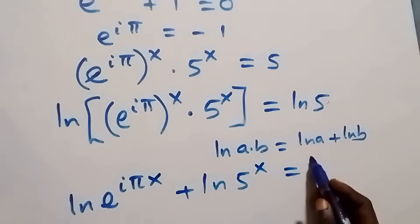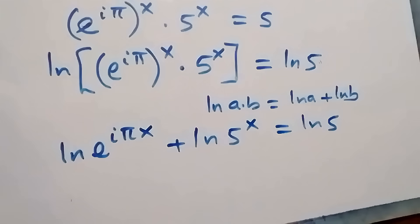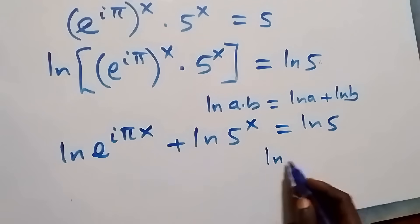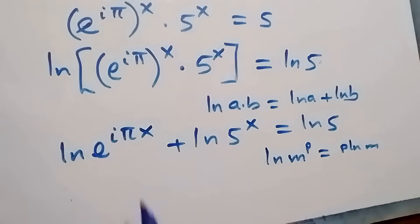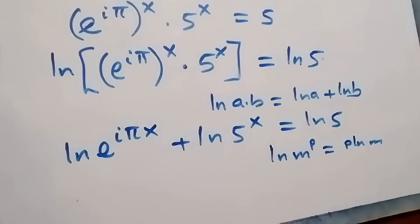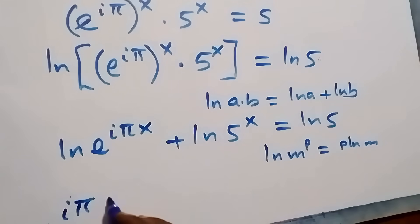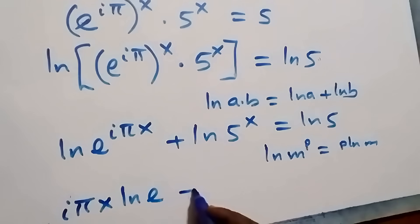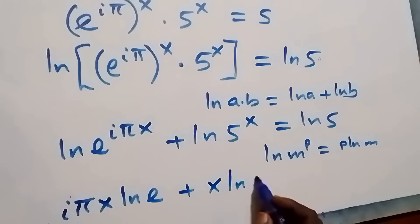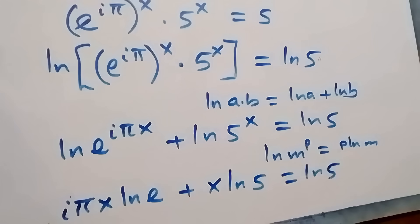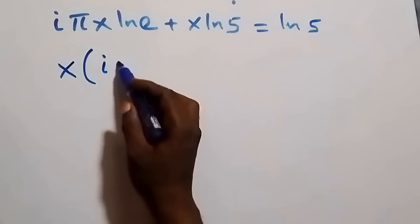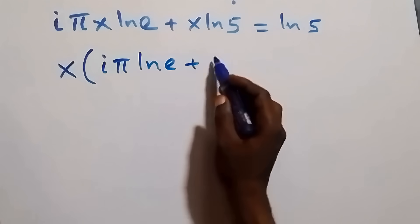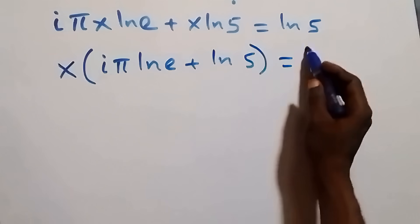Applying the power rule of logarithm — ln m raised to power p equals p ln m — the power on e^(iπ) is x, giving us i pi x times ln e, plus x times ln five, equals ln five. Factoring out x: x times (i pi ln e plus ln five) equals ln five.